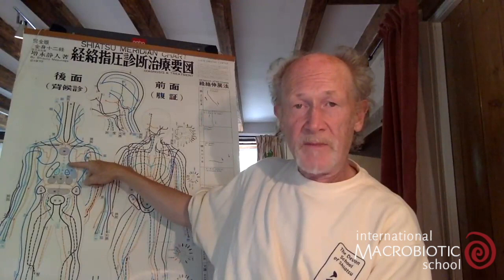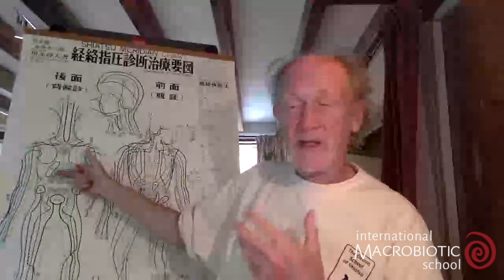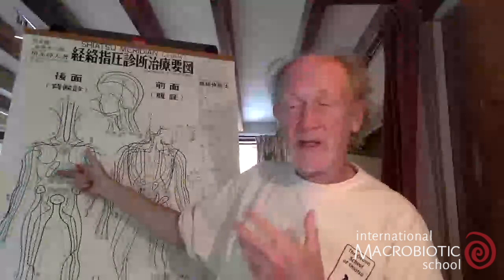The next area down, around the fourth, fifth, and sixth thoracic vertebrae, is at the back of the heart. Our heart is very active, beating all our lives, and needs a lot of energy. The energy in the heart can become depleted, which creates a weakness in this part of the back. Then the next area down, over the seventh, eighth, and ninth thoracic vertebrae, is connected to the heart protector or pericardium — the sac around the heart.